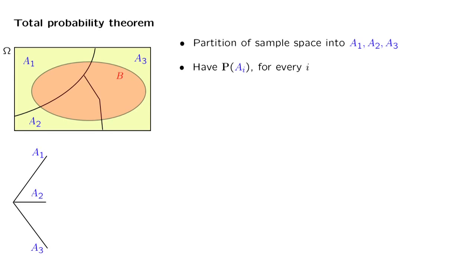Here is what is involved. We have our sample space, and our sample space is partitioned into a number of subsets or events. In this picture, we take that number to be 3, so we have a partition into three possible scenarios.